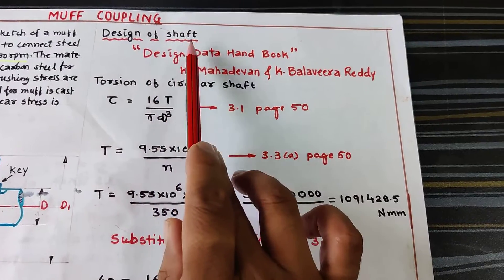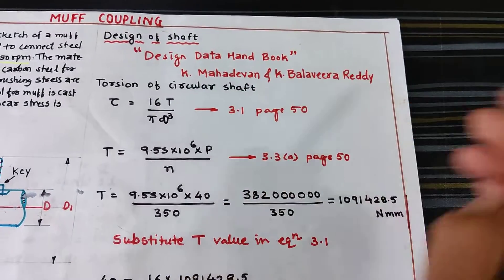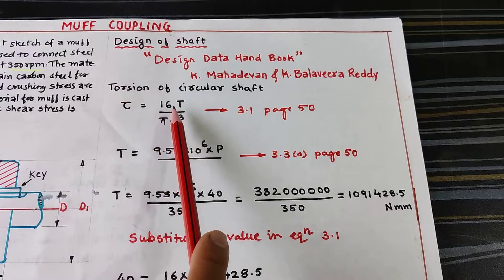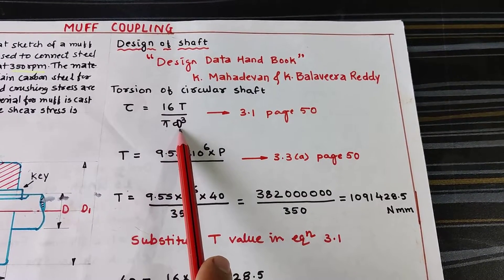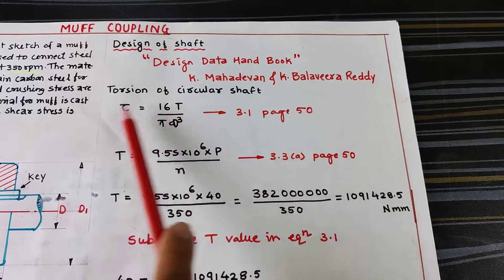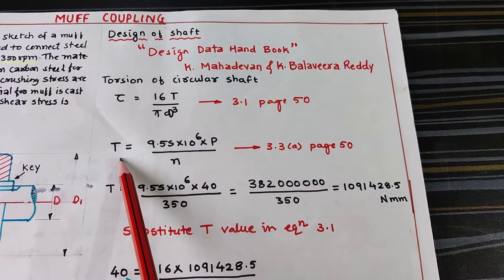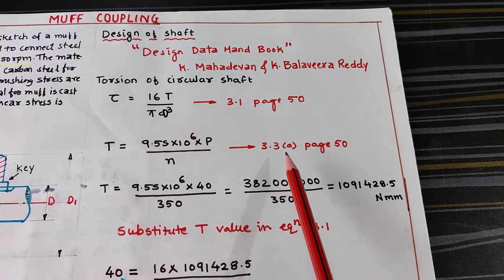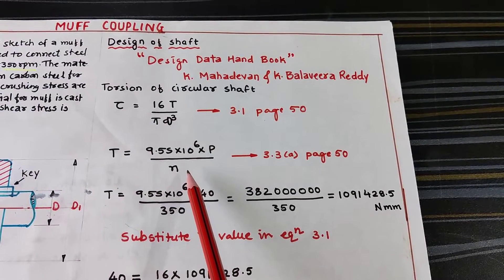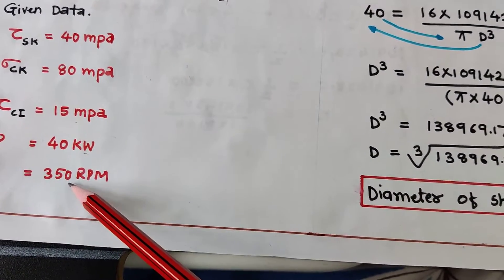Now let's start with the design of the shaft. Using the design data handbook by K. Mahadevan and K. Balvir Reddy, the formula for shear stress is: shear stress = 16T / (π D³), which is equation 3.1 on page 50. First we need to find the torque using equation 3.3A on page 15: T = 9.55 × 10⁶ × P / n, where P is power = 40 kW and n is rpm = 350.